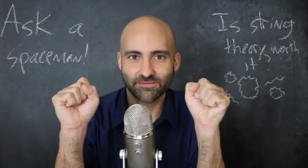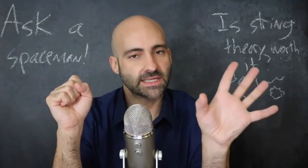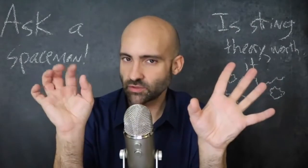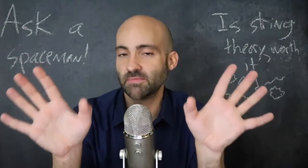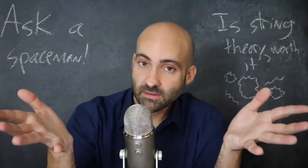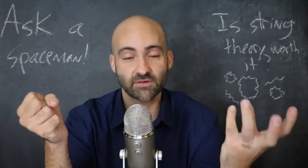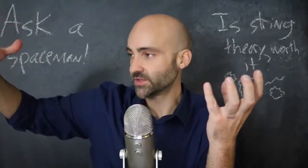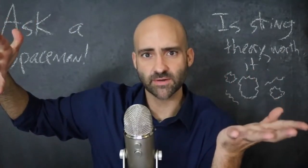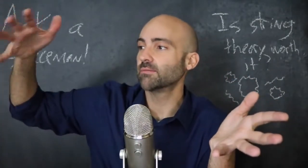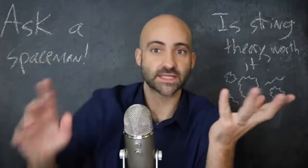So what you have with the ADS-CFT correspondence is: if you construct a string theory in an anti-de Sitter universe, it can connect to a quantum field theory on the boundary of that universe — but that quantum field theory must be conformally invariant. So if you've got a string theory problem and you're trying to solve it but can't, maybe you can map that problem onto the surface of that space-time. Now you have a quantum field theory, and we've been solving quantum field theories for decades. Maybe you can solve your problem there, translate it back, and bypass the ugliness of string theory.